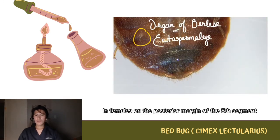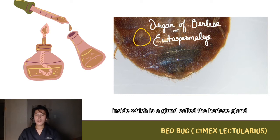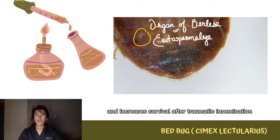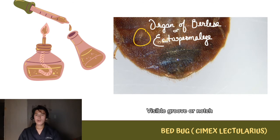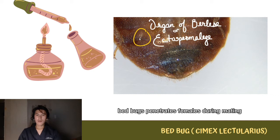In females, on the posterior margin of the fifth segment, is present the organ of Ribaga, inside which is a gland called the Bursa of Berlese, or organ of Berlese, which is the ectospermalate, reducing pathogens and increasing survival after traumatic insemination. There is a visible groove or notch on the right ventral, or underside, of the abdomen called the ectospermalage, which is the location where the male bedbug penetrates the female during mating.